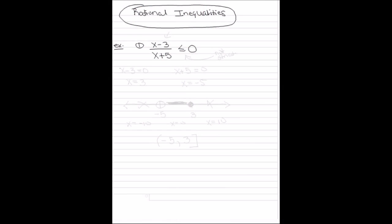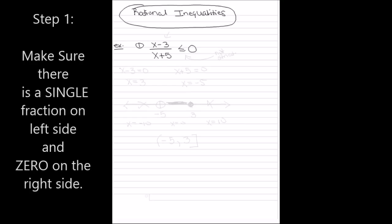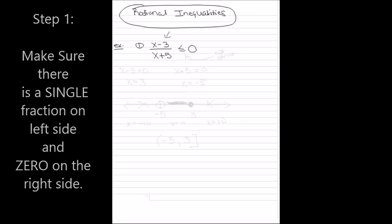Now let's talk about rational inequalities. For a rational inequality, the first thing you need to do is make sure you have a single fraction on one side and zero on the other side. In this example, on the left-hand side I have the single fraction x minus 3 over x plus 5, and on the other side I have zero. So we know this is set up in the correct form.